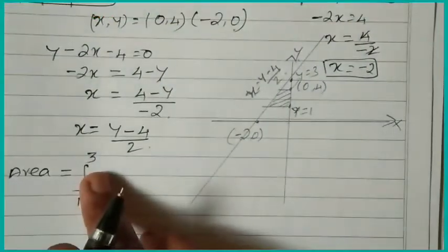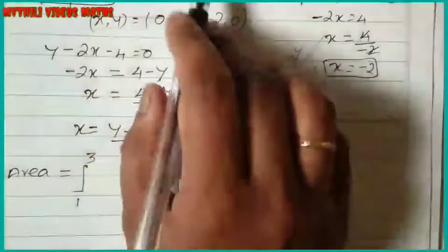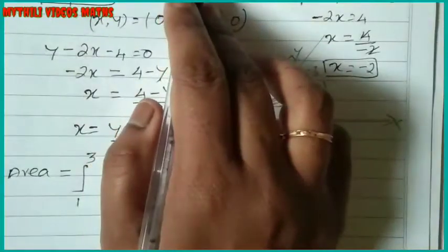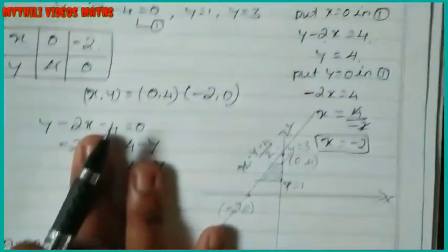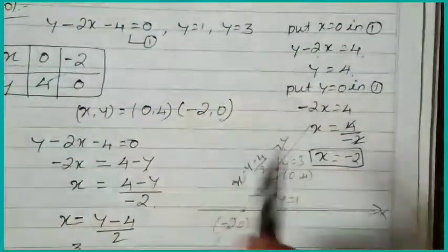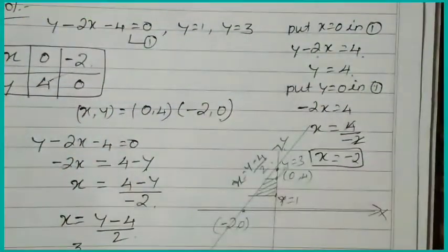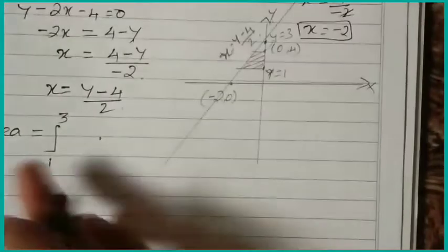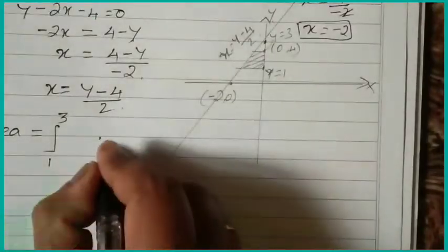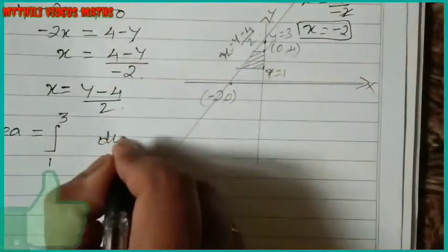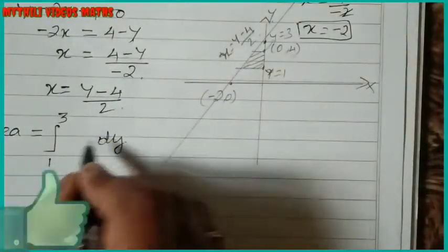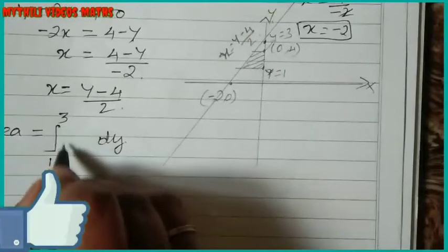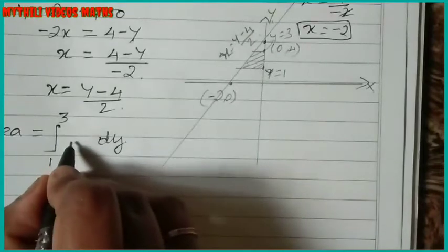Since the bounded region lies to the left of the y-axis, the x values are negative. So we integrate the negative value. The formula gives us integration from 1 to 3 of minus (y minus 4) divided by 2, dy, which we can write as minus one-half times the integral.